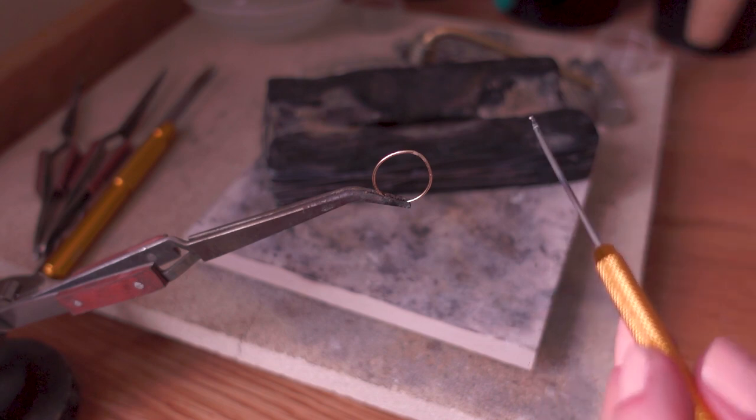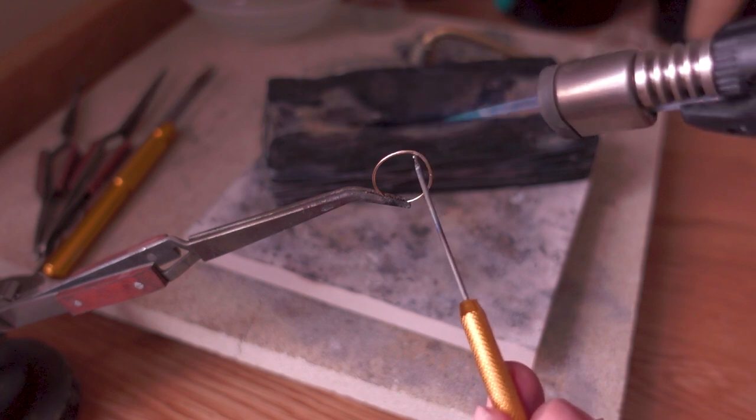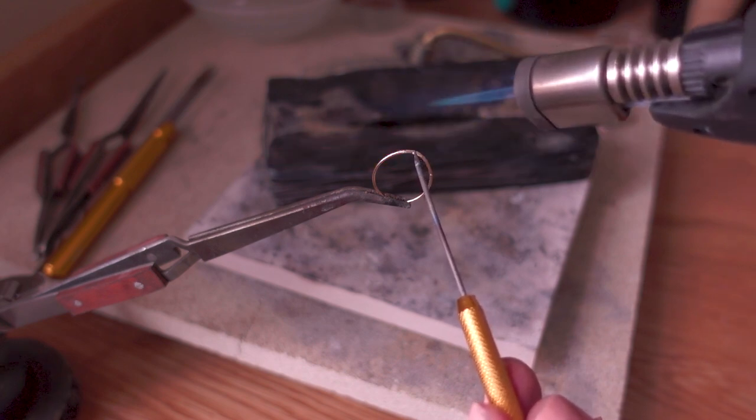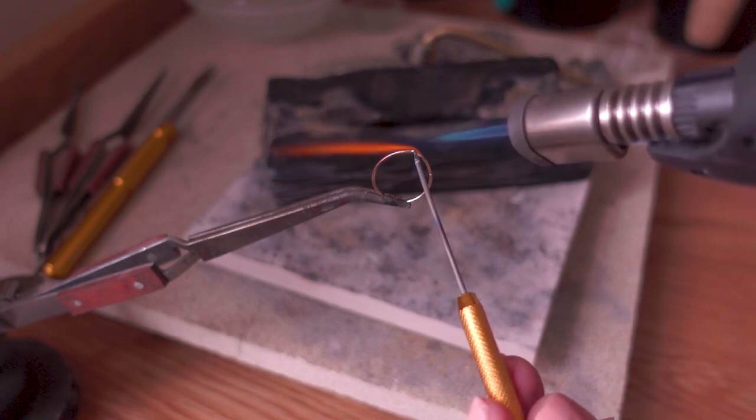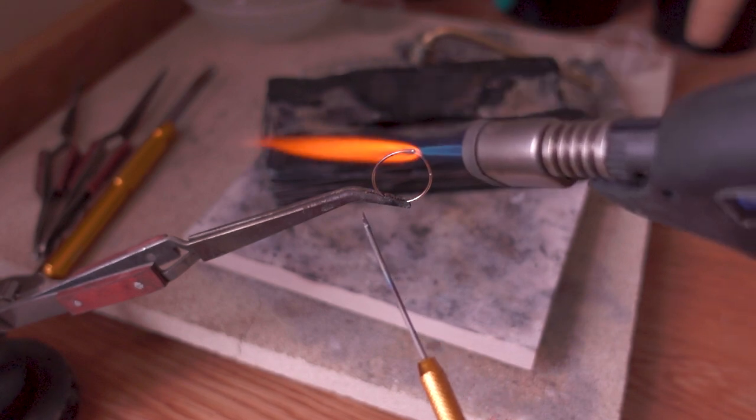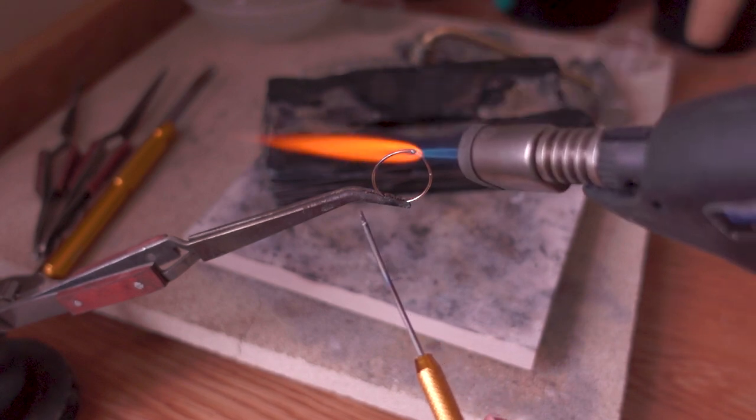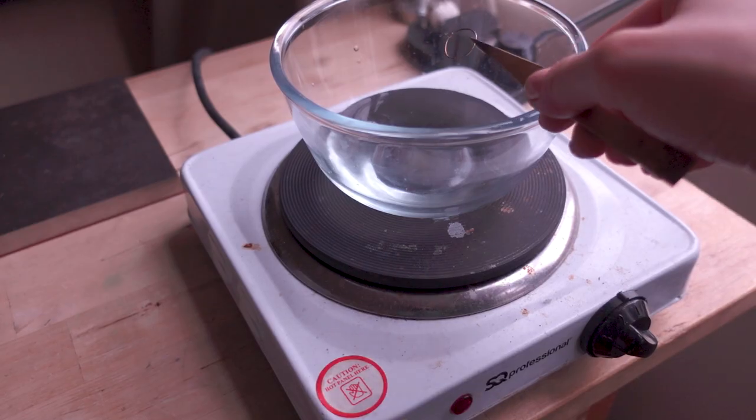And now pay attention that I'm not heating up the whole ring. That's because you don't need to heat up the gold filled. You only should heat it where you need to solder it and as you can see I'm using this heat and run technique just to make sure I'm not overheating it. So there's that. I'm going to place it in the pickle as usual.